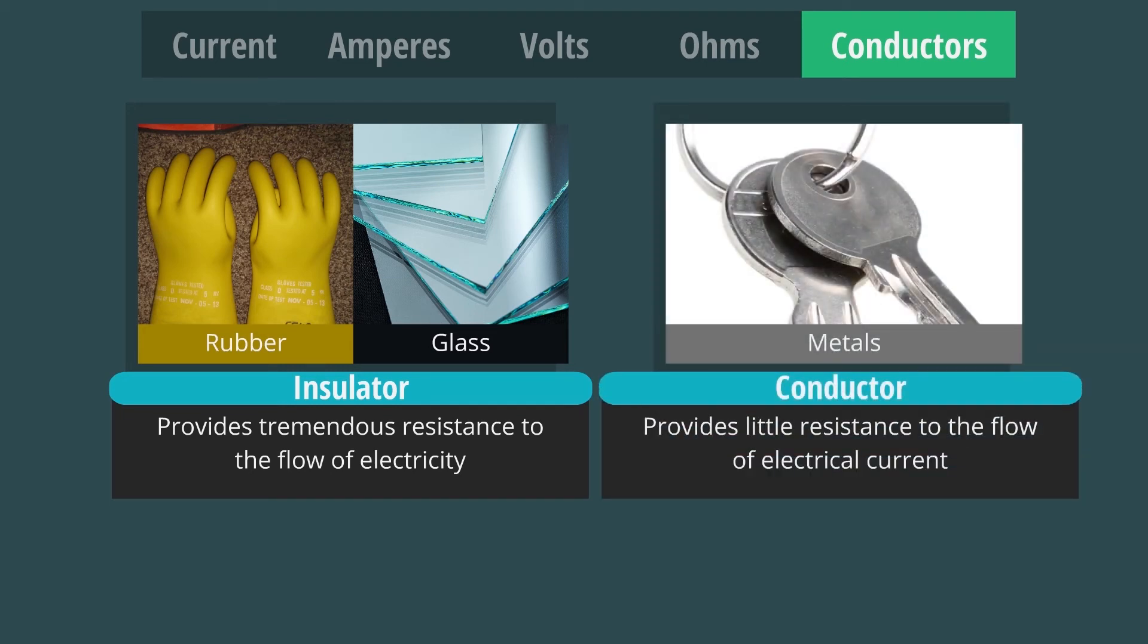Some substances, such as metals, provide little resistance to the flow of electrical current. These are called conductors. They conduct electricity without the loss of current.